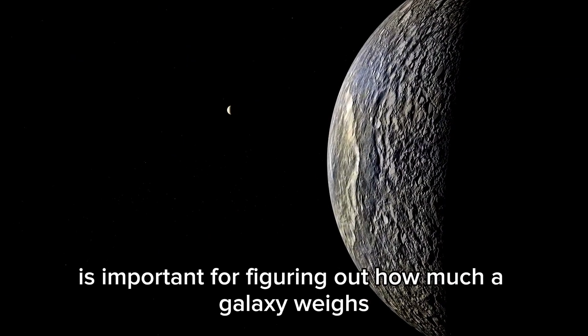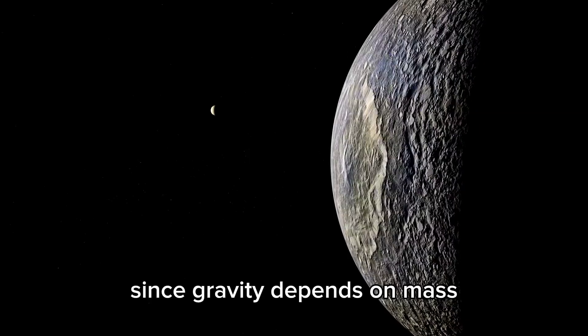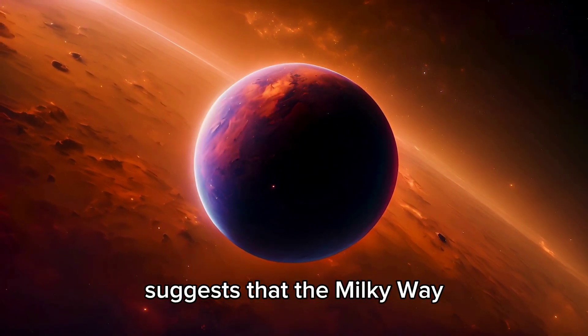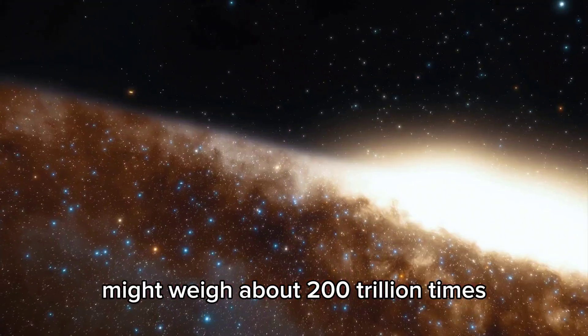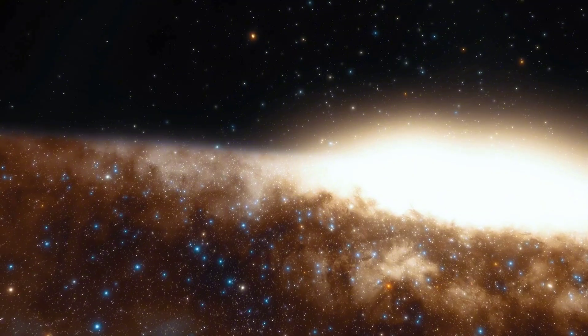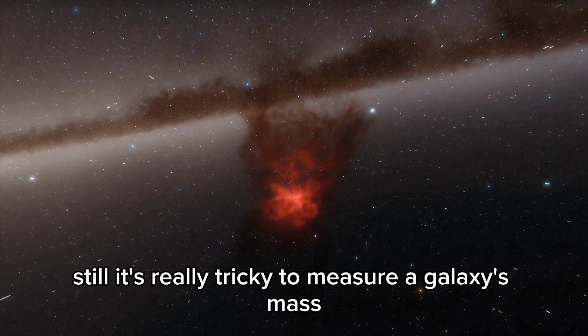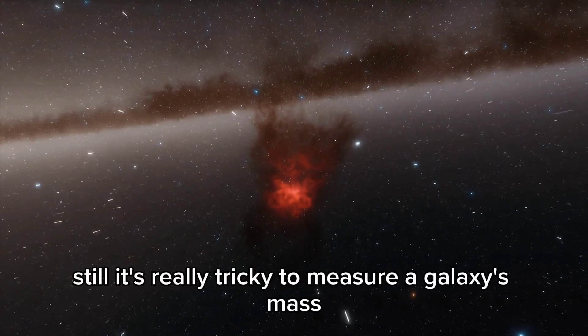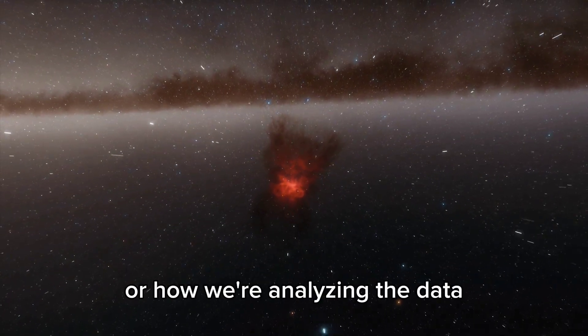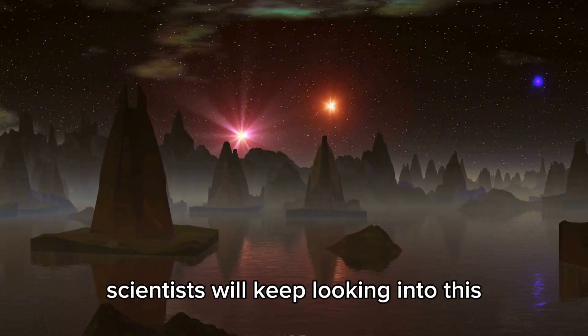How fast stars orbit is important for figuring out how much a galaxy weighs. Since gravity depends on mass, a recent analysis of Gaia's data suggests that the Milky Way might weigh about 200 trillion times the mass of our sun. That's a lot less than we thought before. This could mean that there's less dark matter in our galaxy than we thought. Still, it's really tricky to measure a galaxy's mass, and the error could be because of Gaia's measurements or how we're analyzing the data. As we get more information, scientists will keep looking into this.